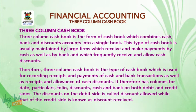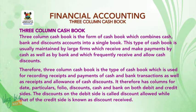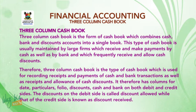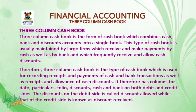It therefore has three columns for date, particulars, folio, discounts, cash, and bank on both debit and credit sides. The discounts on the debit side is called discount allowed, while that of the credit side is known as discount received.